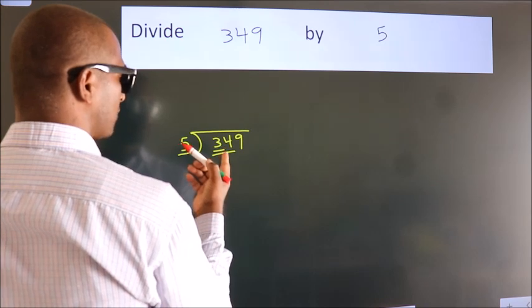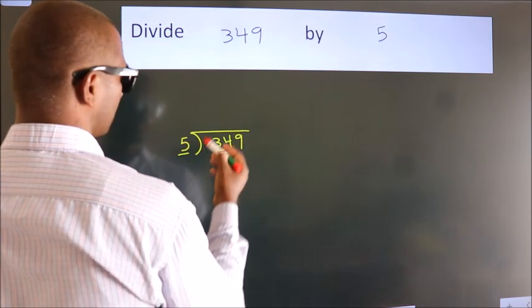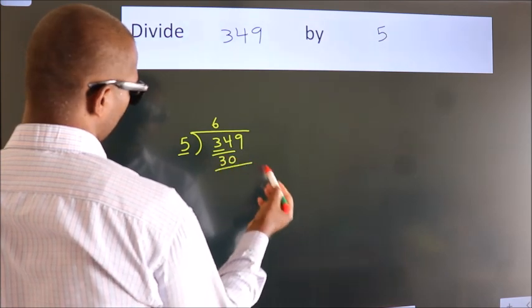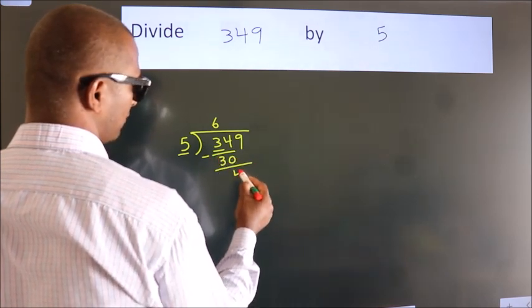A number close to 34 in the 5 times table is 5 times 6, which equals 30. Now we should subtract. We get 4.